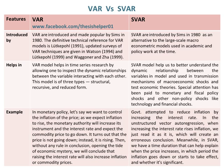An example of an SVAR model: the government attempted to reduce inflation by increasing the interest rate. In unstructured vector auto-regression, when increasing the interest rate appears to raise inflation, we just read it as it is, which will create an erroneous conclusion. Meanwhile, in SVAR, we have a time duration that can help explain when the price increases, in which period the inflation goes down or starts to take effect, and whether it is significant.